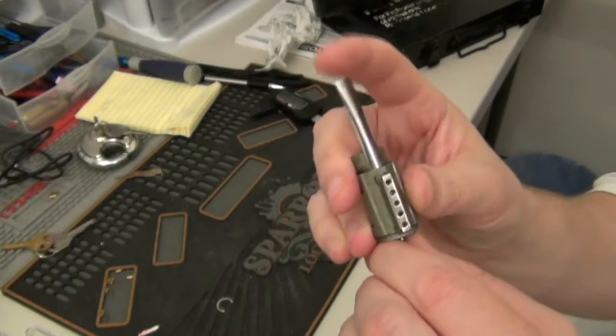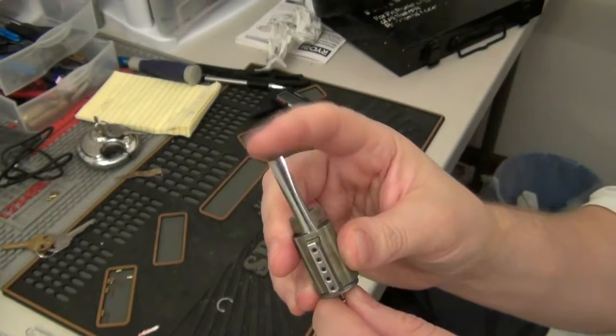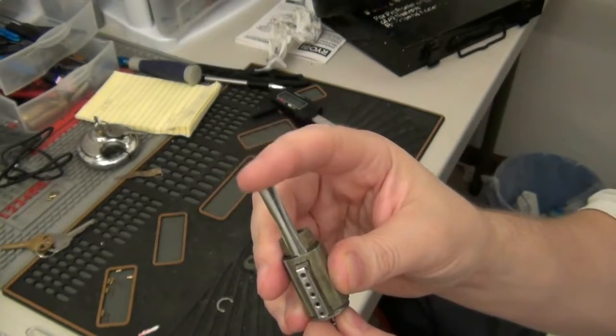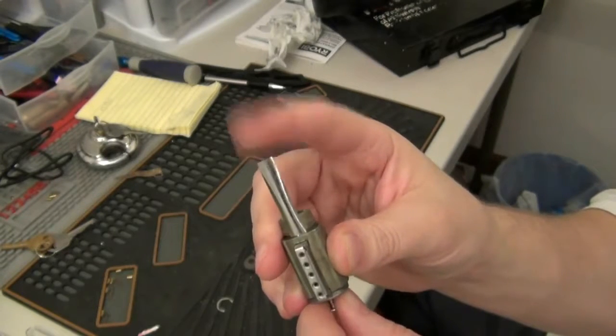What will happen here is the bottom pins will start to fall back down, but when I push on the shim, it pushes between the top and the bottom pin and won't let the top pin fall in and block the shear line.